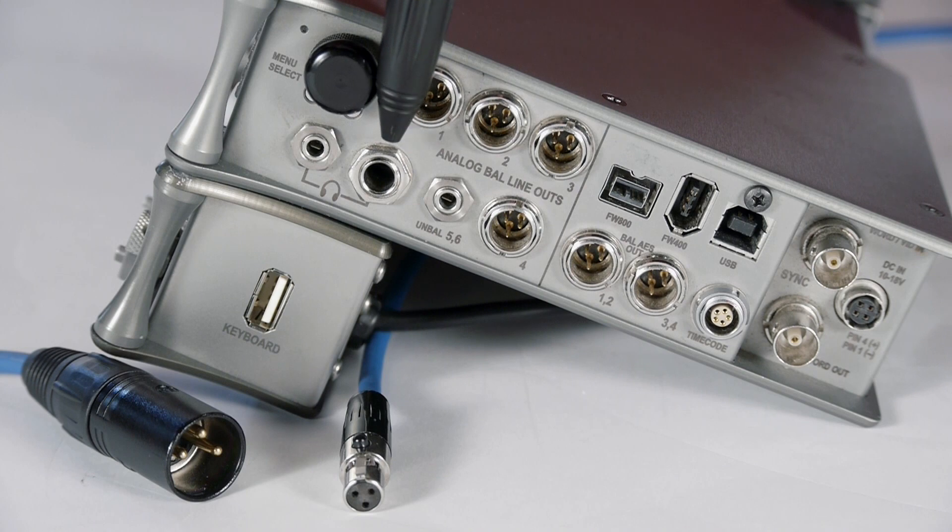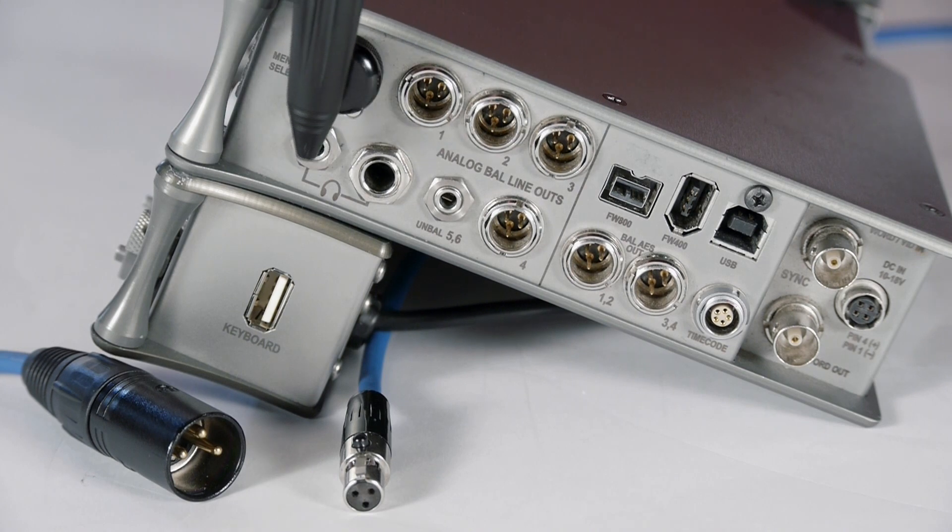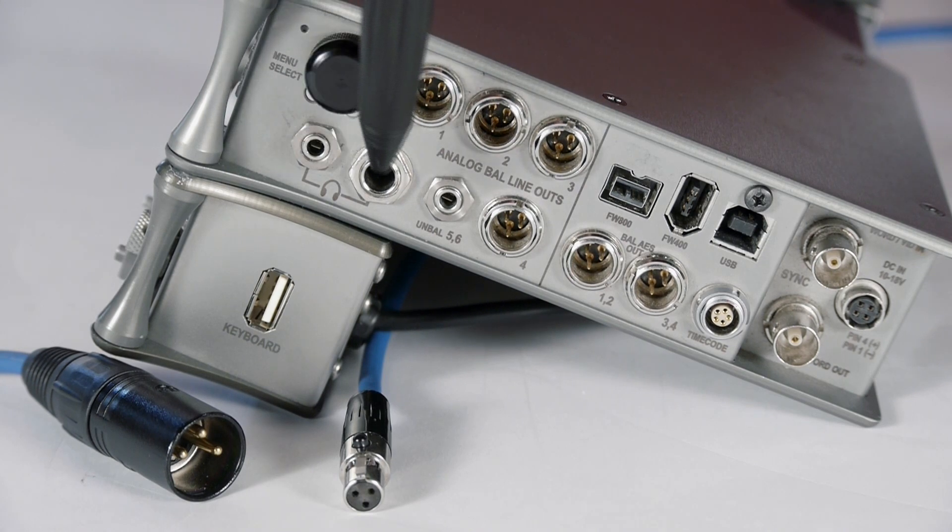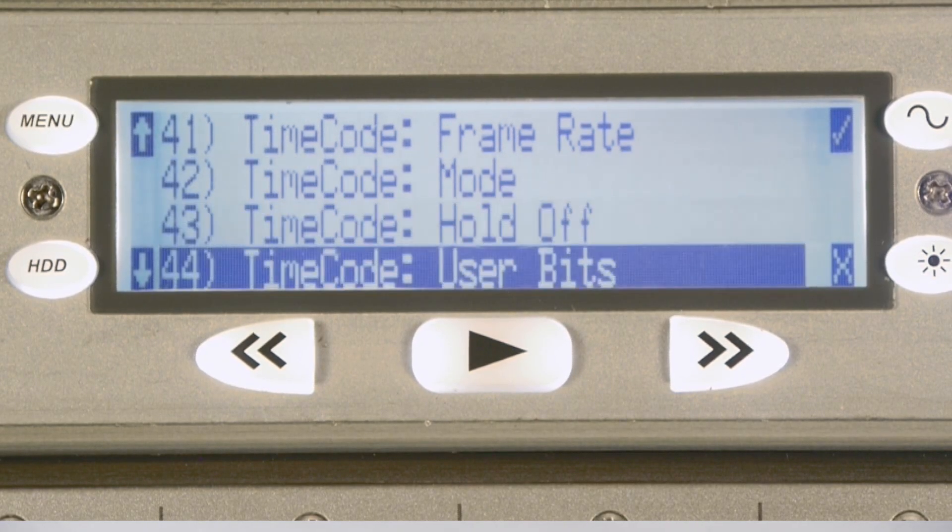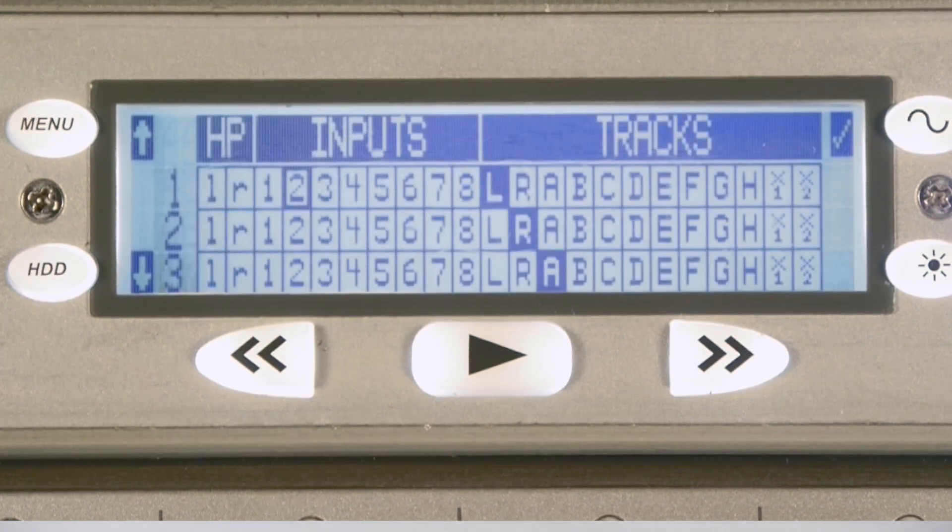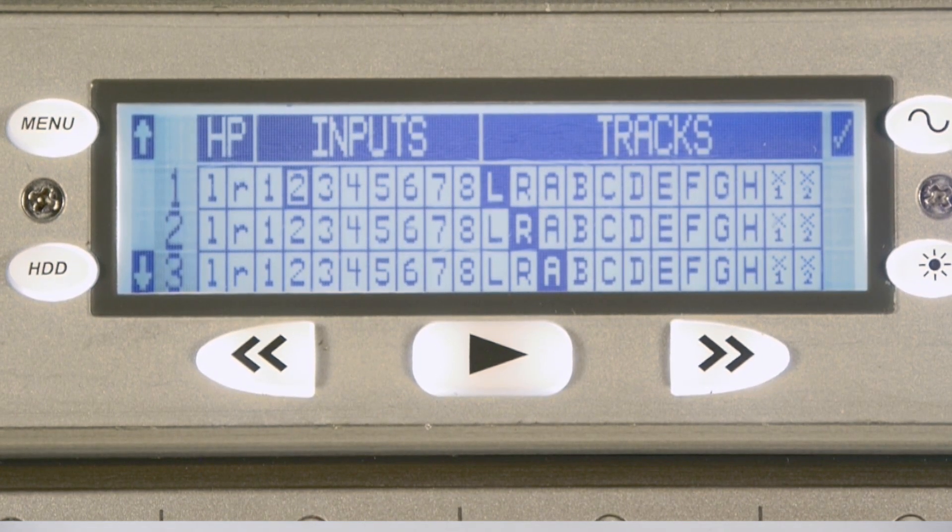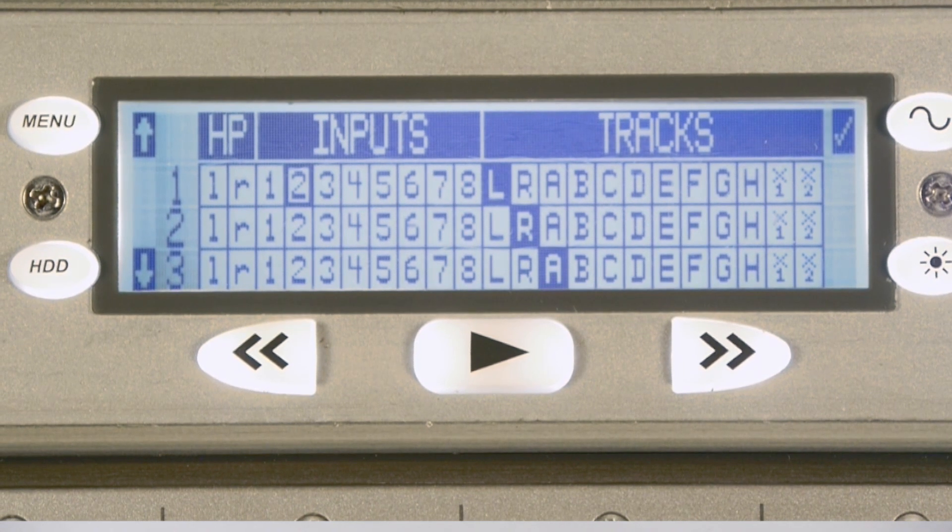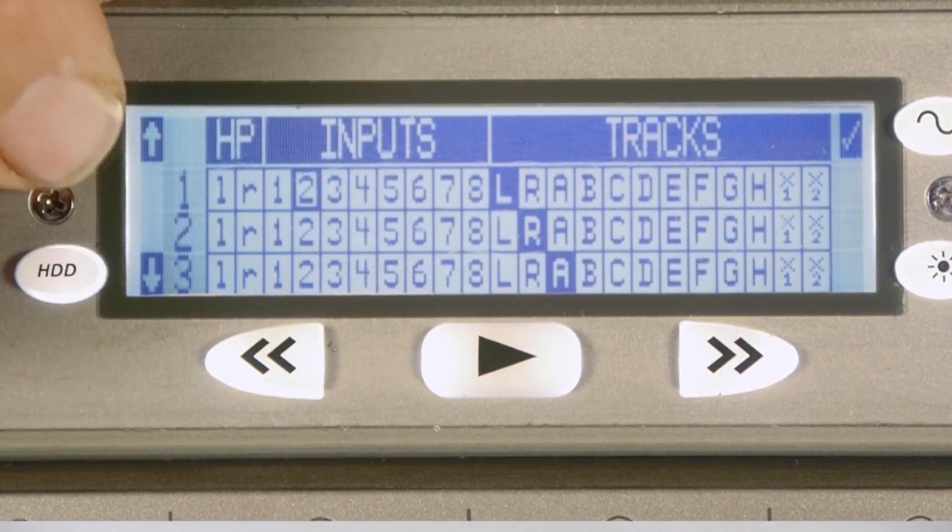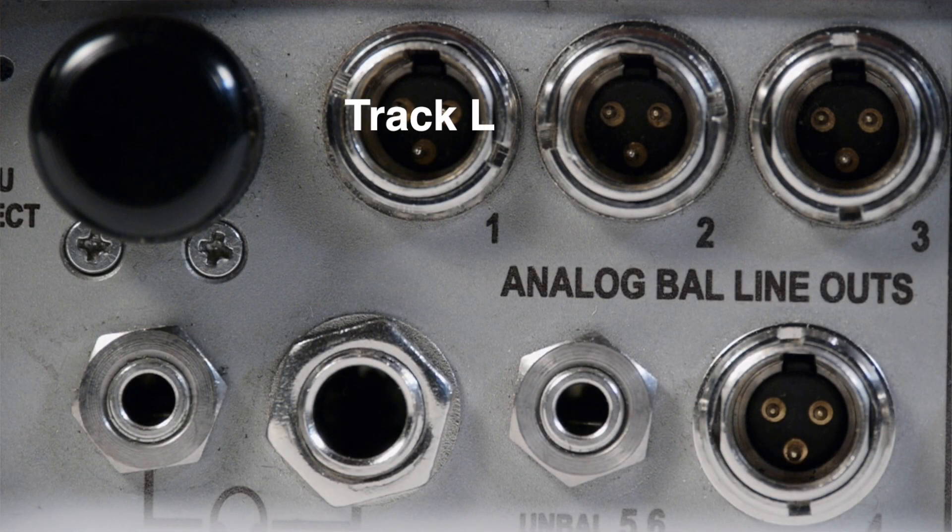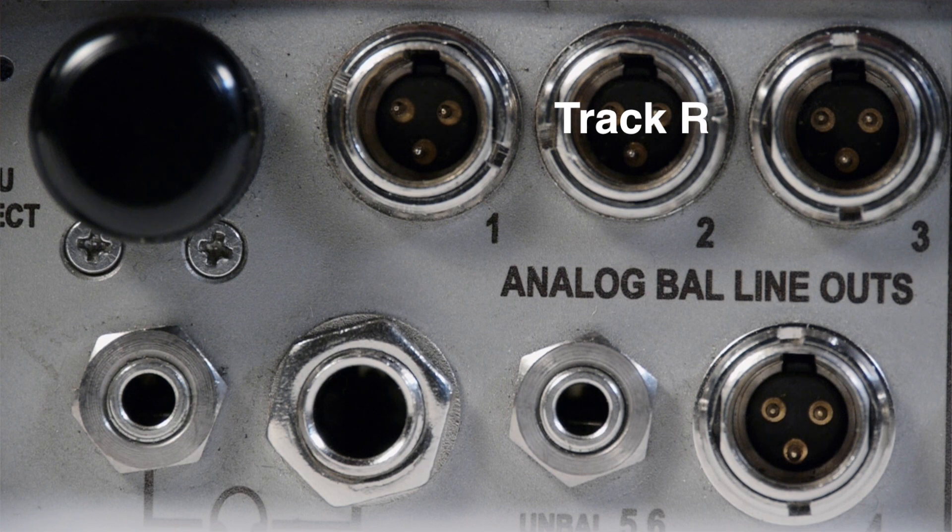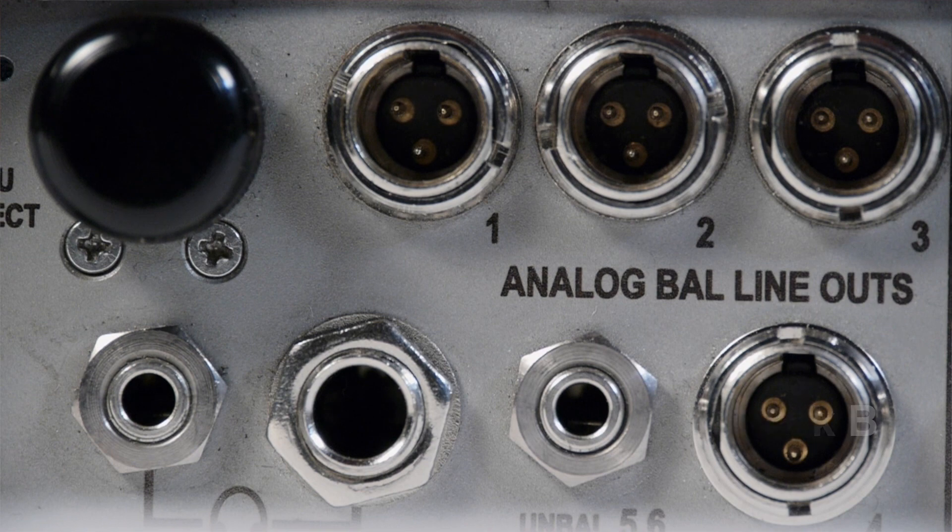For headphone monitoring, the headphone output source on the 788T utilizes both quarter inch and 3.5 millimeter TRS jacks. You could route any input, track, or headphone mix to any of these outputs by simply accessing the setup menu option output menu. Audio signals routed to an output are sent to both analog and digital outputs simultaneously. By factory defaults, outputs one through six are assigned output one left track, output two right track, output three track A, output four track B, output five track C, and output six track D.